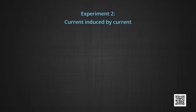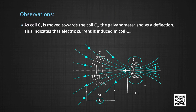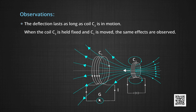Experiment 2: current induced by current. The bar magnet is replaced by a second coil C2 connected to a battery. The steady current in the coil C2 produces a steady magnetic field. As coil C2 is moved towards coil C1, the galvanometer shows a deflection, indicating that electric current is induced in coil C1. When C2 is moving away, the galvanometer shows a deflection again, but this time in the opposite direction. The deflection lasts as long as coil C2 is in motion.